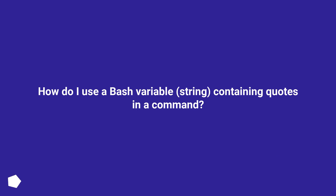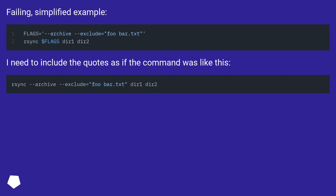How do I use a bash variable string containing quotes in a command? Failing simplified example — I need to include the quotes as if the command was like this.